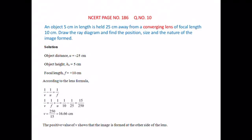The positive value of v shows that the image is formed at the other side of the lens, because this is a lens. The light will pass through the lens and the image will be forming at other side. This is indicated by positive sign. If the sign was negative, then the image is forming on the same side of the object.